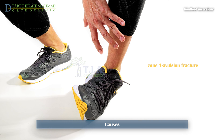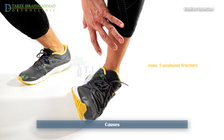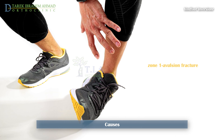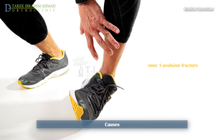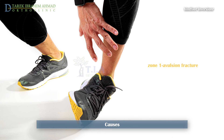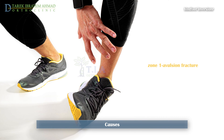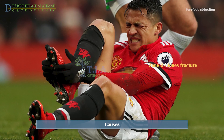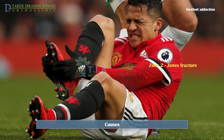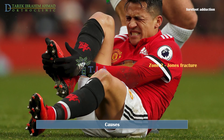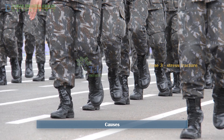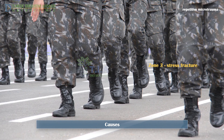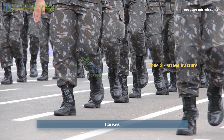Tuberosity avulsion fractures occur during forced inversion of the foot and ankle. This injury can occur from stepping into a hole, twisting your foot during sports, or falling off a stair. The cause is forceful contraction of the peroneus brevis and contracture of the lateral band of the plantar fascia. A Jones fracture is caused by significant adduction force applied to the forefoot or by direct trauma.